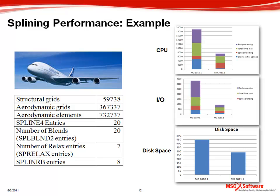Here is an example of a system with close to 60,000 structural grids, 370,000 aerodynamic grids, and 730,000 aerodynamic elements. There are 20 SPLINE4 entries in the model. On the right side, you can see a comparison of resource usage in the current release compared with the 2010 release. NASTRAN 2011 achieves superior performance while using less I/O and disk space, as you can see in these plots.